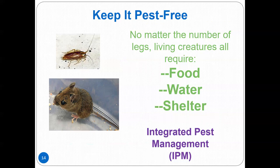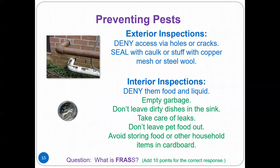80% of human exposure to pesticides happens indoors, so use less toxic pesticides such as sticky traps or borax. Integrated pest management, or IPM, means keeping pests out and giving them nowhere to hide. Inspect your home on the exterior and interior, and deny pest access by sealing holes with caulk — you may want to stuff them with copper mesh or steel wool first. Remember that if a hole is as round as a nickel, a mouse can get its head through it, and if it can get its head through, its body will fit.